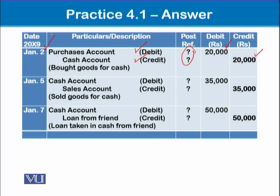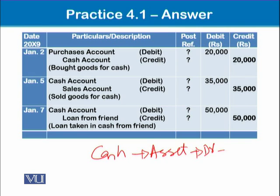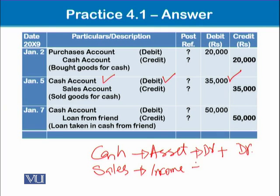Don't forget to put the date and narration — these are the six parts of a journal entry. In the next transaction, we sold goods for cash. Cash is an asset belonging to the debit group and has increased, therefore we debit cash with its amount in the debit column. Since we sold goods, sales is the accounting head which belongs to the income credit group, and since we have an increase in this it is credited with its amount. The narration is 'sold goods for cash.'